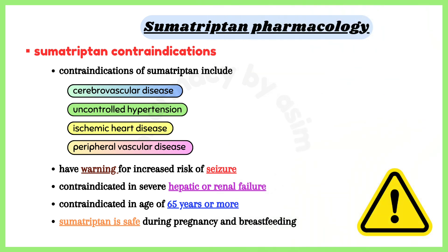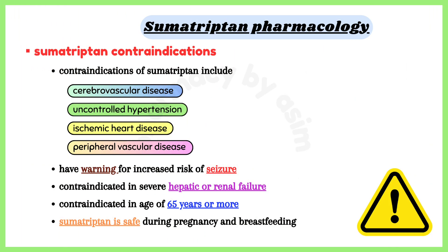Contraindications of sumatriptan include cerebrovascular disease, uncontrolled hypertension, ischemic heart disease, and peripheral vascular disease. Sumatriptan also carries a warning for increased risk of seizure. Other contraindications include severe hepatic or renal failure and age of 65 years or more.